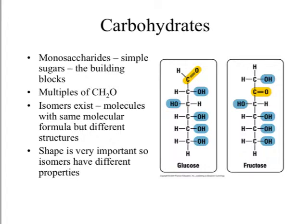The first macromolecule we're going to focus on is carbohydrates. Carbohydrates are made up of very simple sugars called monosaccharides, which are the building blocks of bigger carbohydrates. The simplest carbohydrate is a monosaccharide, and they're made up of multiples of the base formula CH2O. The simplest monosaccharides are going to be six carbons long.